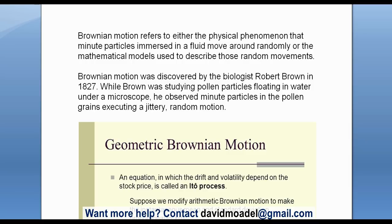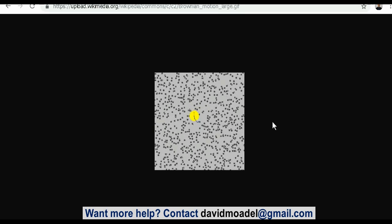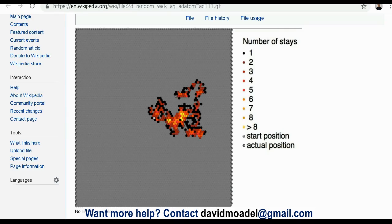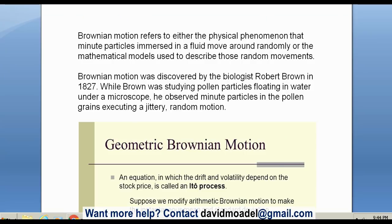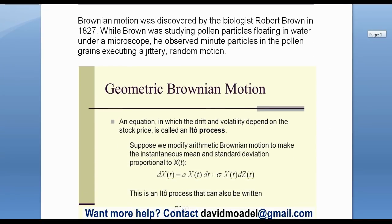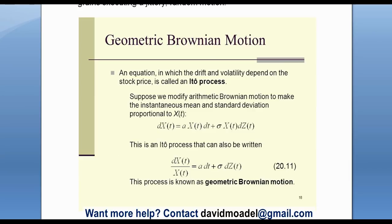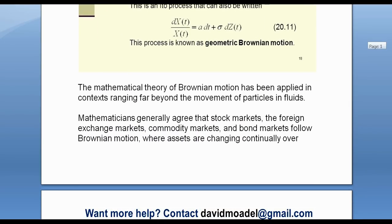Brownian Motion was discovered by the biologist Robert Brown way back in 1827. While Brown was studying pollen particles floating in water under a microscope, he observed those little minute particles in the pollen grains executing a jittery random motion. And for you math people out there, if you'd like to see the geometric Brownian Motion formula, there it is. It's okay if you don't understand it — you don't have to. But if you're into that, you can also just Google it.